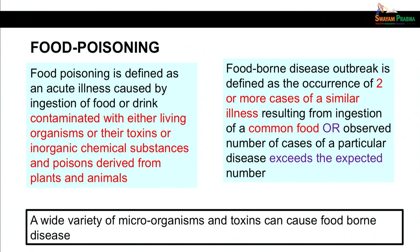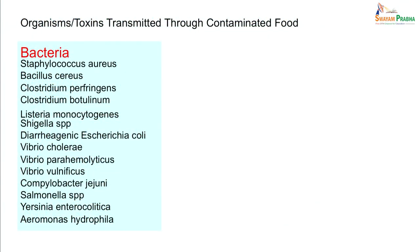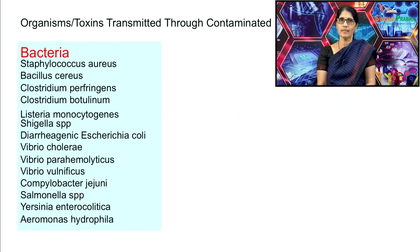A wide variety of microorganisms and toxins can cause foodborne disease. The gram-positive organisms include Staphylococcus aureus, Bacillus cereus, Clostridium perfringens, Clostridium botulinum, and Listeria monocytogenes. Gram-negative bacilli which can contaminate food include Shigella species, Diarrhoeagenic E. coli, Vibrio cholerae, Vibrio parahemolyticus, Vibrio vulnificus, Campylobacter jejuni, Salmonella species, Yersinia enterocolitica, and Aeromonas hydrophilia.